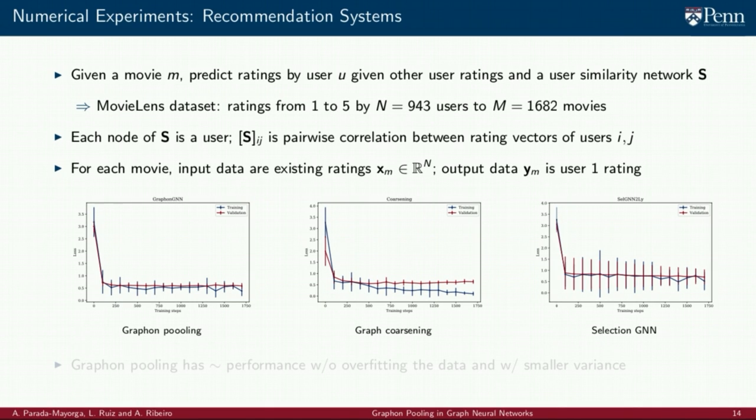As for the data, for each movie m, the input data are the existing ratings to the movie m grouped in the rating vector x sub m. If a rating doesn't exist, the corresponding vector entry is set to 0. The output data y sub m is scalar corresponding to the rating given by user 1. Using this data, we train GNNs with all pooling strategies to predict user 1's rating by optimizing the cross entropy loss.